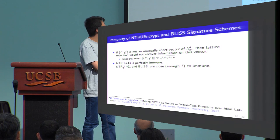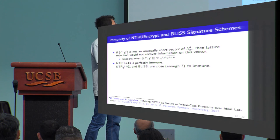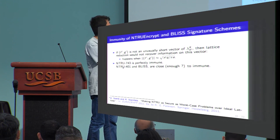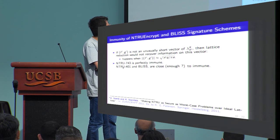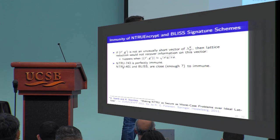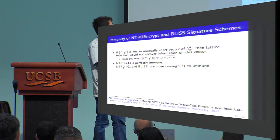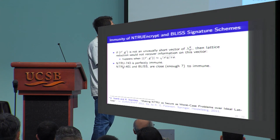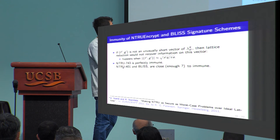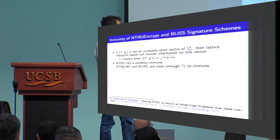Regarding NTRU and BLISS signature schemes specifically: if the norm of f and g is not a very short vector in the subfield lattice — that is, if it is similar to the Gaussian heuristic of sqrt(N' * Q) — then lattice reduction won't recover any information. Because our attack works in a subfield, the minimum relative degree we can take is two. Testing this against NTRU parameters: NTRU-743 appears to be perfectly immune, meaning even going down to a subfield of relative degree two it remains close to the Gaussian heuristic, so there is no way to recover using this method. For NTRU-401 and BLISS, they are close to this threshold but there seem to be some constant factors, making it unclear whether they are fully immune.